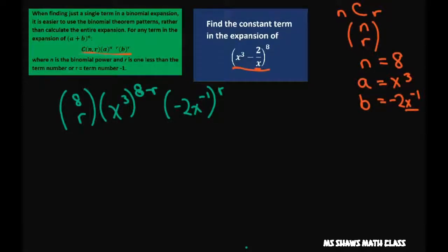Now what I want to do is solve for r knowing that x to the zero is my constant term. So all I'm going to do is look at these x's right now and solve for r. I'm going to choose x cubed to the 8 minus r power. And then we're going to do x to the negative 1. Negative 1 times r is negative r. And we want to set this equal to x to the zero.